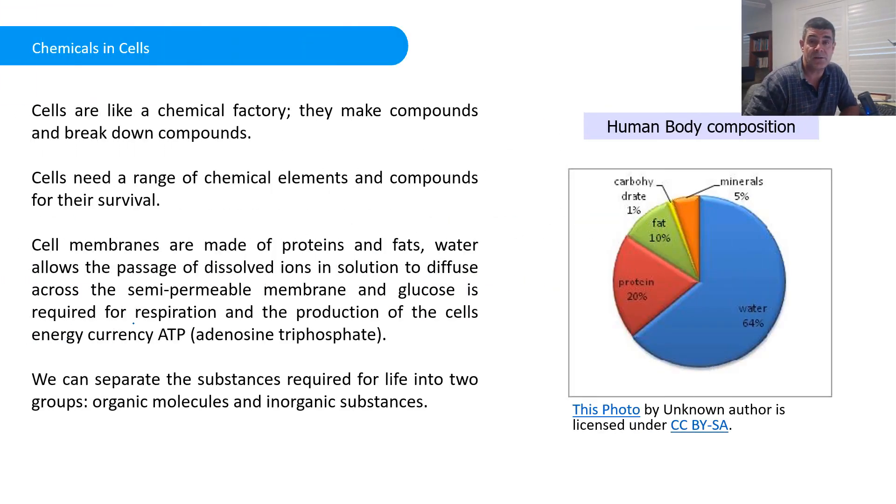So, the important thing is that cells are made of different chemicals. Each of those chemicals is made of individual atoms and we do see some patterns in the types of atoms that are common in biological systems. Cells are like chemical factories and they are capable of both synthesizing or constructing chemical substances and also of decomposing or breaking them down.